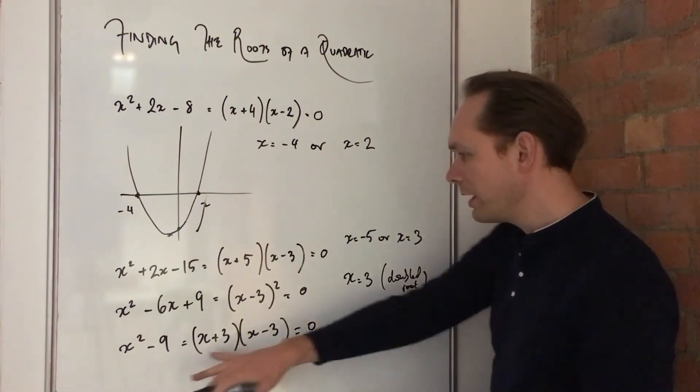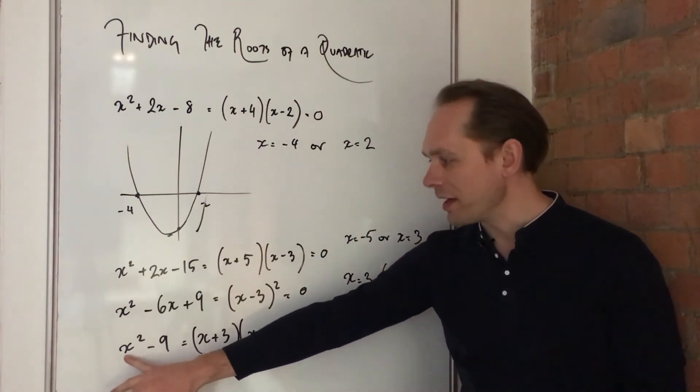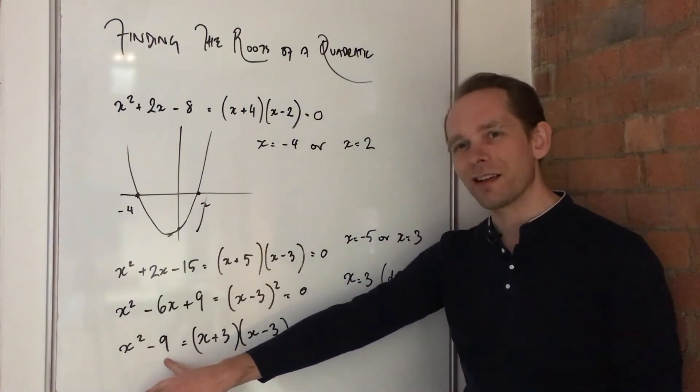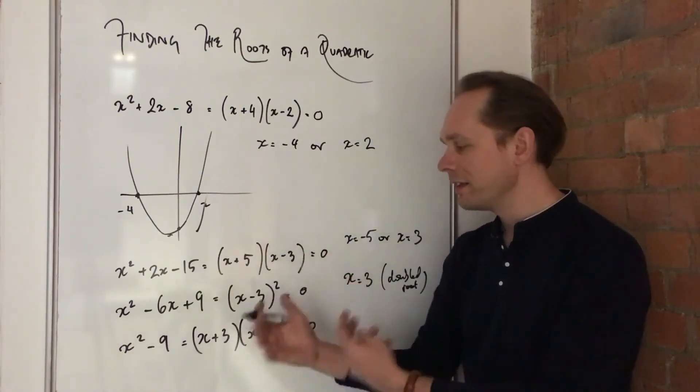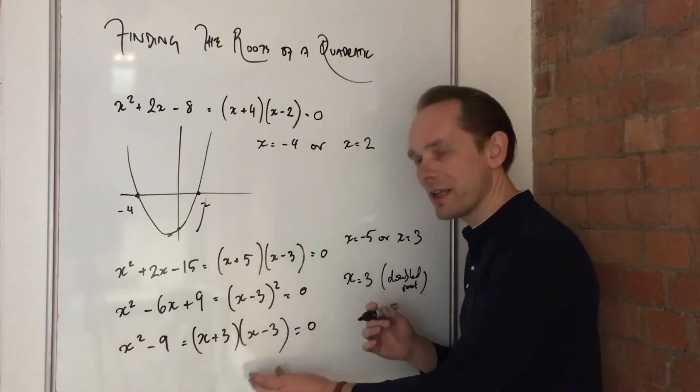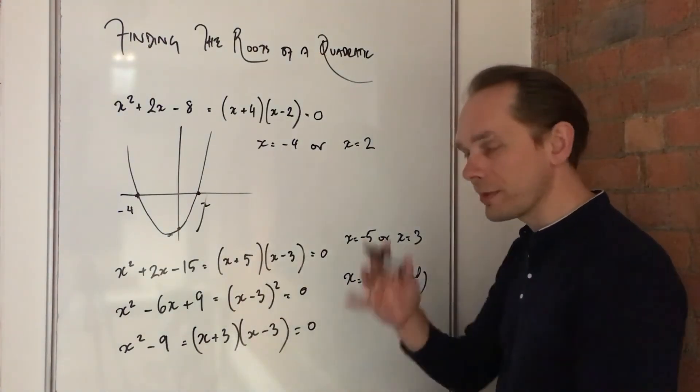Then the last one is where I've got a difference of two squares. You've got an x squared minus 9. You recognise that as a square number, and you can see difference of two squares. x plus 3, x minus 3. I've talked about that on another video.